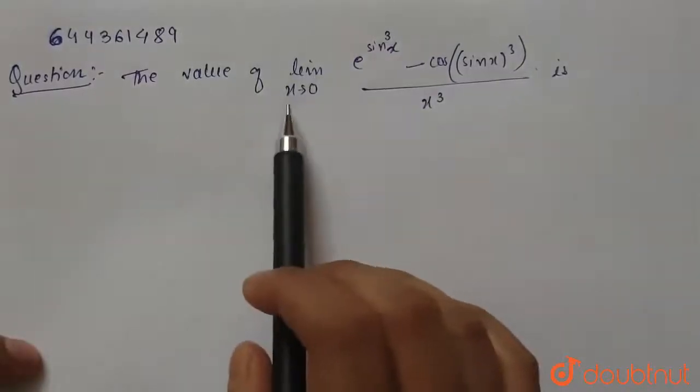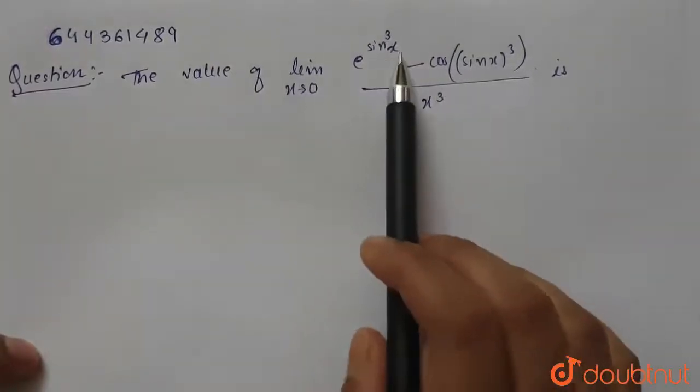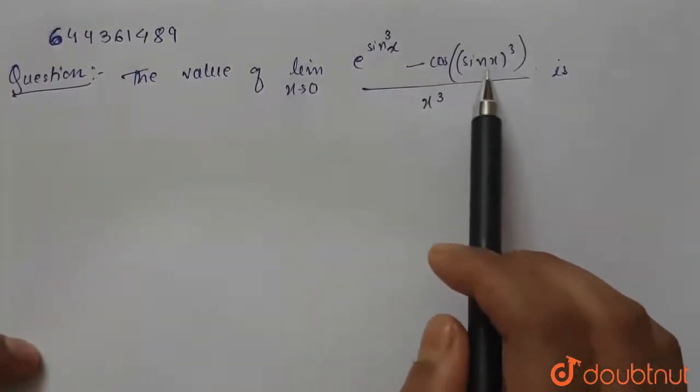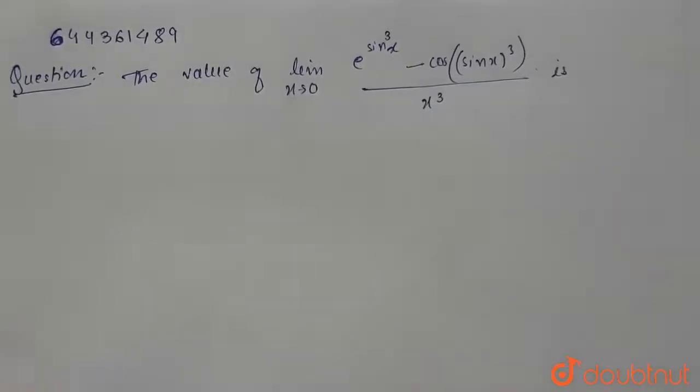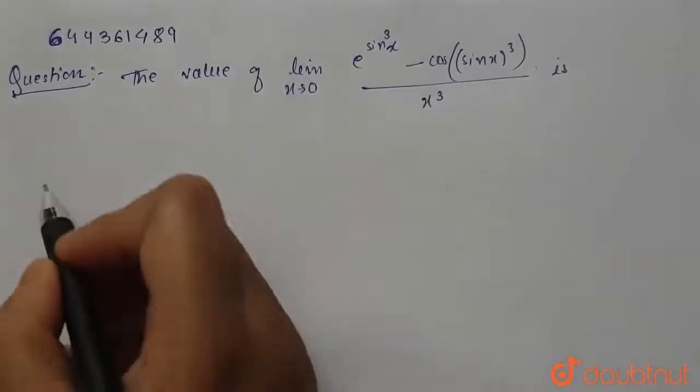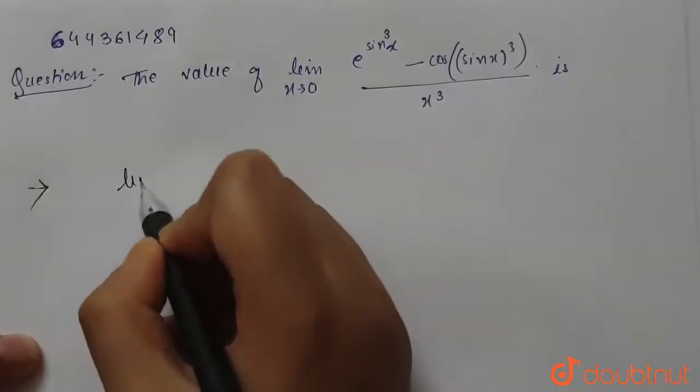is the value of limit as x tends to zero of (e^(sin³x) - cos(sin x)³) / x³. So let's start with the solution. We are given limit x tends to zero (e^(sin³x) - cos(sin x)³) / x³.